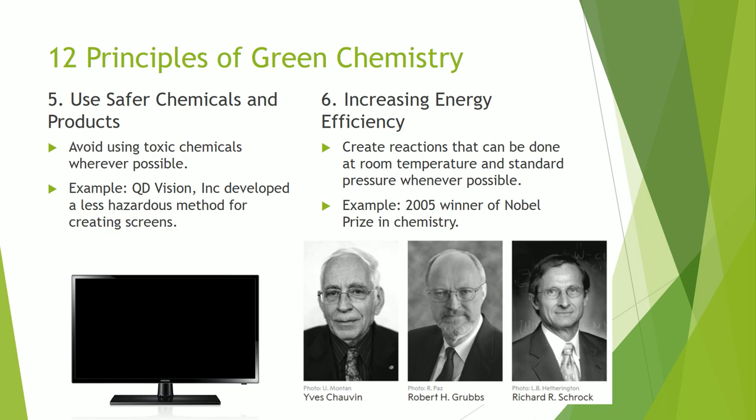Number five: use safer chemicals and products. Avoid using toxic chemicals whenever possible. This is similar to number four, but is more about the use of chemicals rather than creating new chemicals. For example, in 2014, QD Vision Inc developed a way to use heavy hydrocarbons in a reaction that had previously used far more hazardous materials for the creation of flat screen displays for phones and TVs.